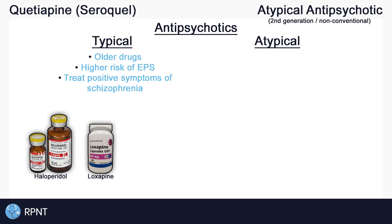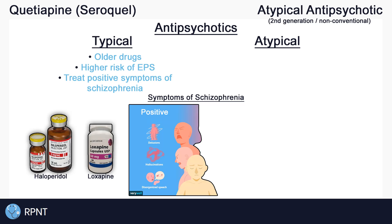Typical antipsychotics are generally used to treat positive symptoms of schizophrenia and other behavioral problems. Positive symptoms are thoughts, feelings, or actions that are added onto a person's regular behaviors. Delusions, hallucinations, and disorganized speech are examples of positive symptoms of schizophrenia.